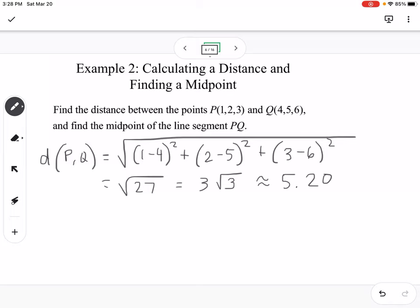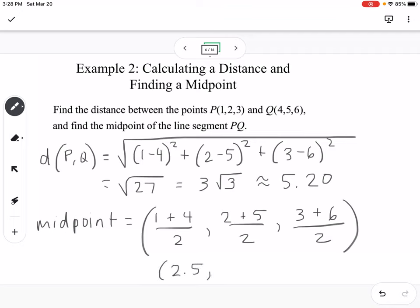And then our midpoint. Midpoint would be, we would take (1+4)/2, (2+5)/2, and (3+6)/2. That would be 5/2, which would be 2.5. This would be 7/2, which would be 3.5, and this would be 9/2, which would be 4.5. Or you could write them as simplified fractions as well.